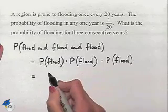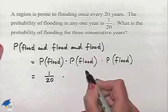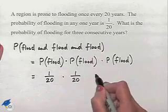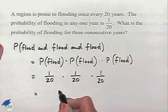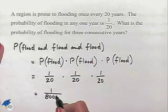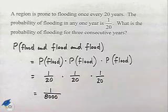to find the probability of a flood the first year we take the 1/20, the second year it's the same probability 1/20, and the third year also the same 1/20, to give us our fraction of 1 over 8,000 as our probability of having a flood for three consecutive years.